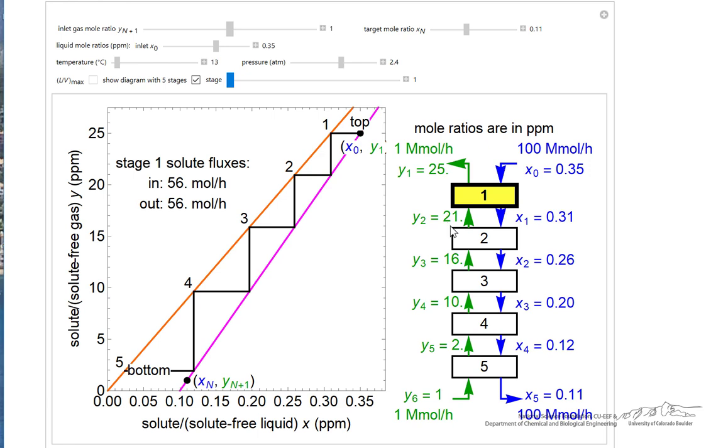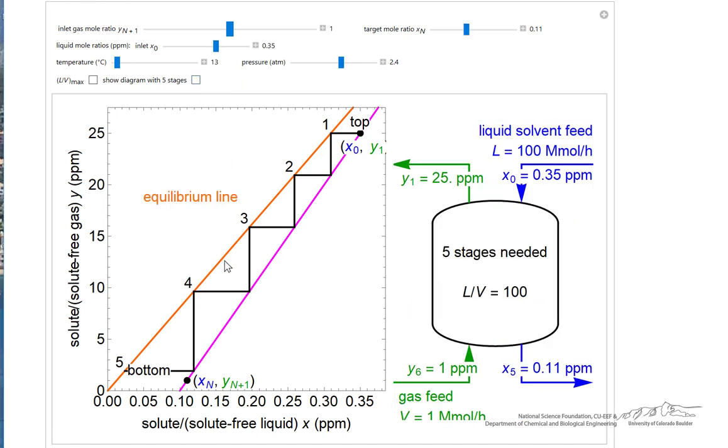In addition, it calculates, for example, let me use the slider and step to stage two. It shows the moles in and out of the solute for stage two, likewise for stage three. If I uncheck that box and go back to the original, I'll point out a couple other things.